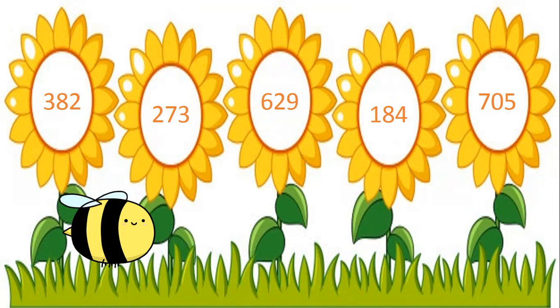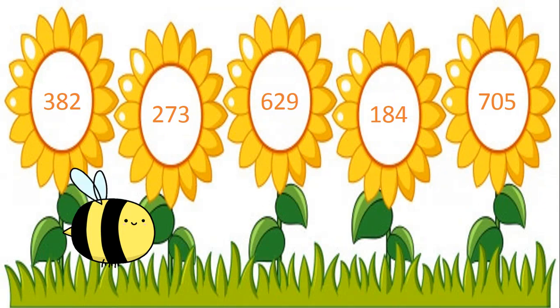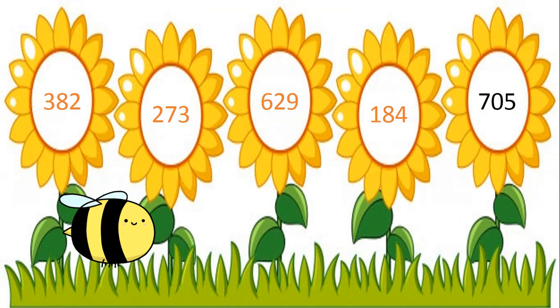The digits in the hundreds place are: 3, 2, 6, 1, 7. Which is the greatest digit in the hundreds place? Yes, 7. So the number 705 is the greatest number.